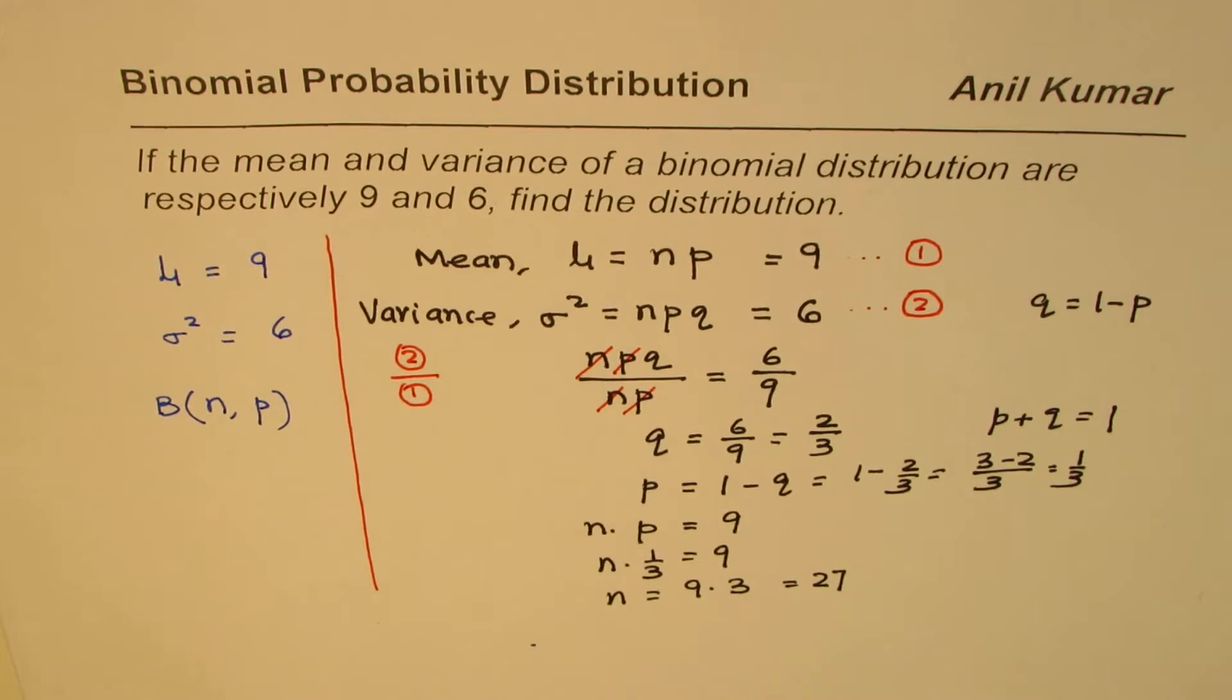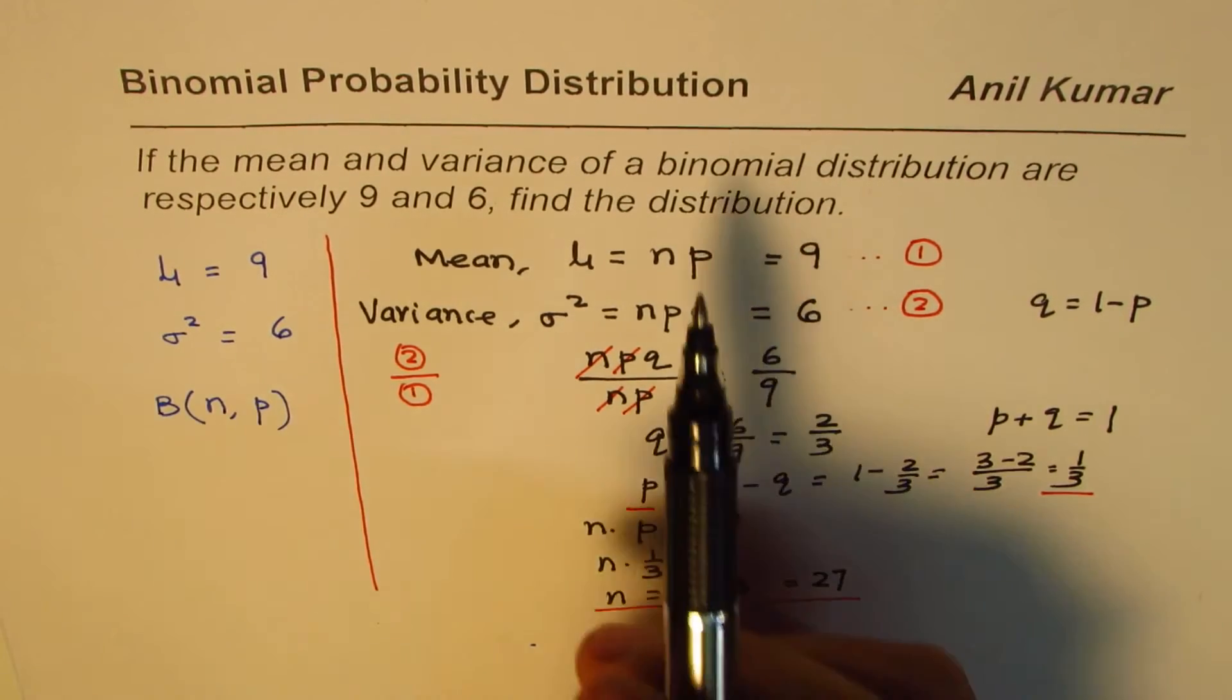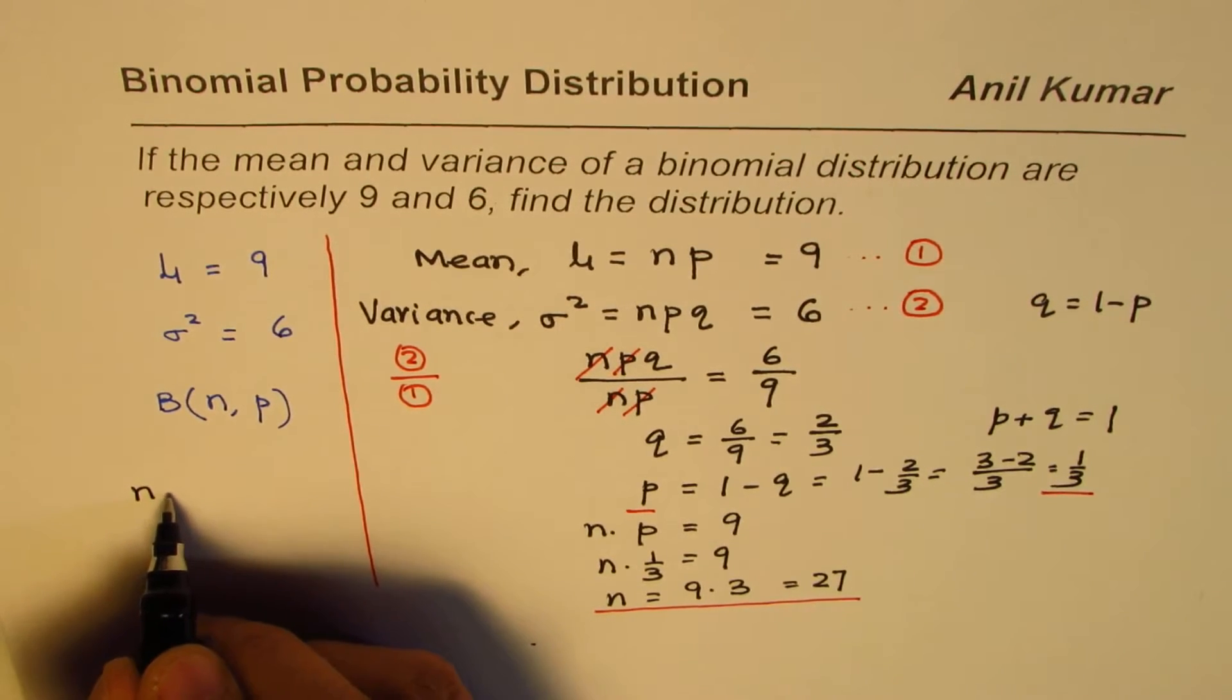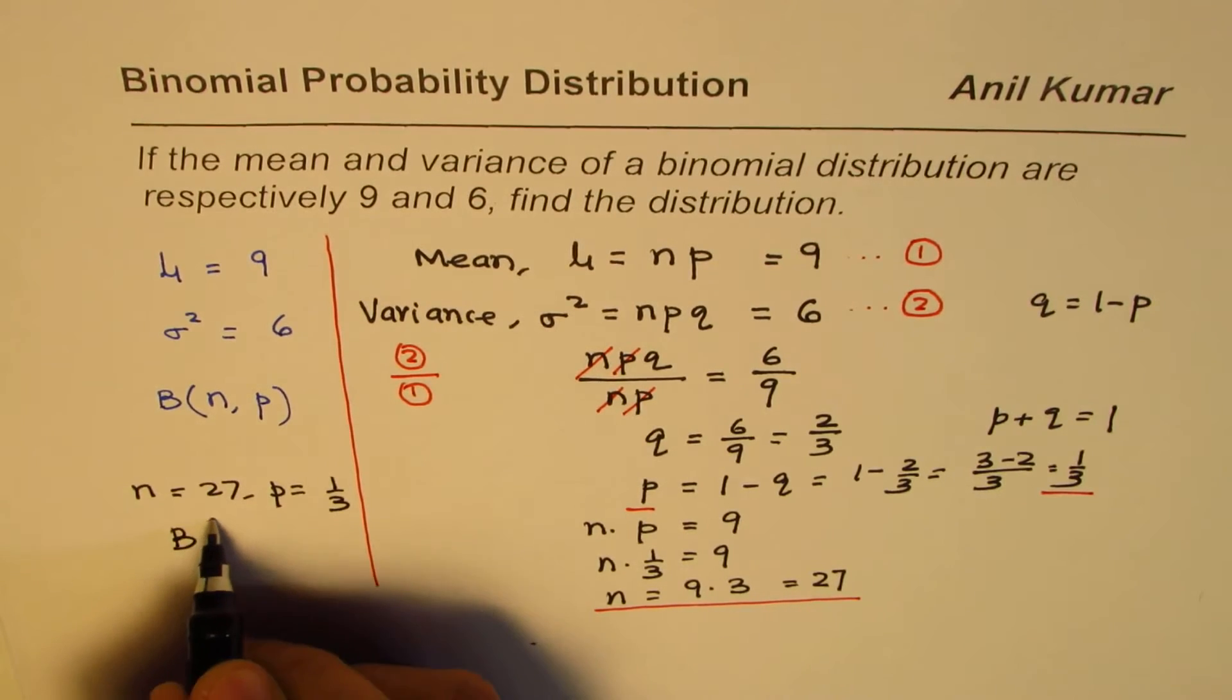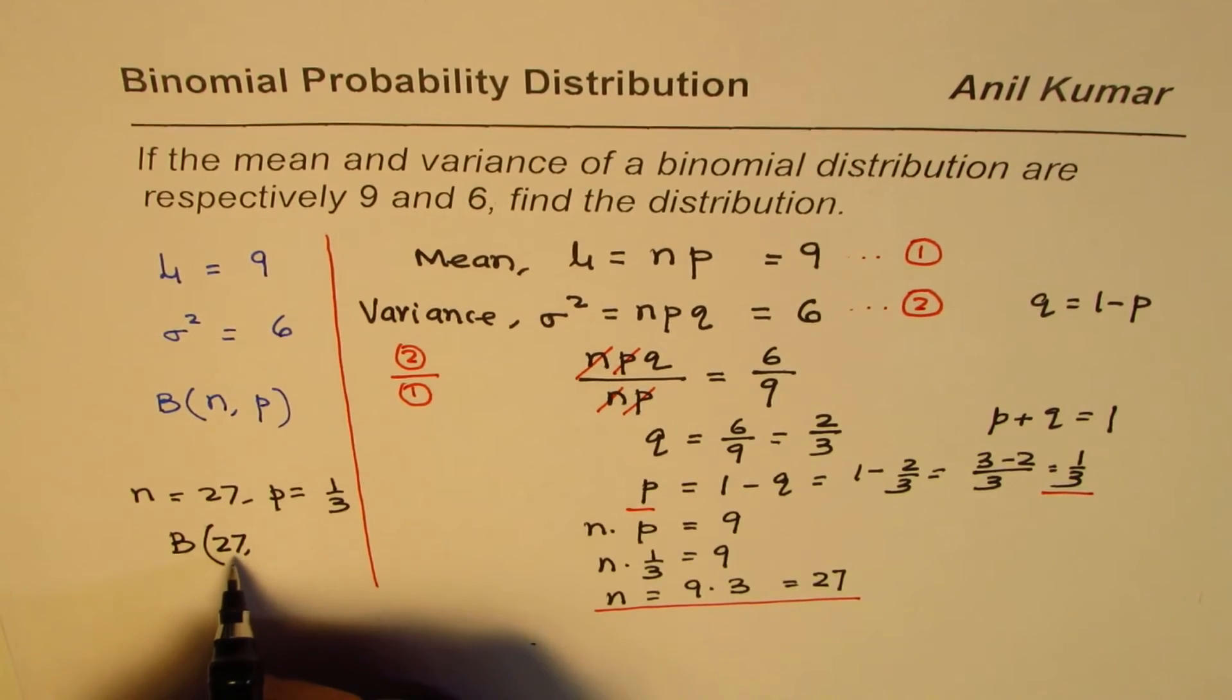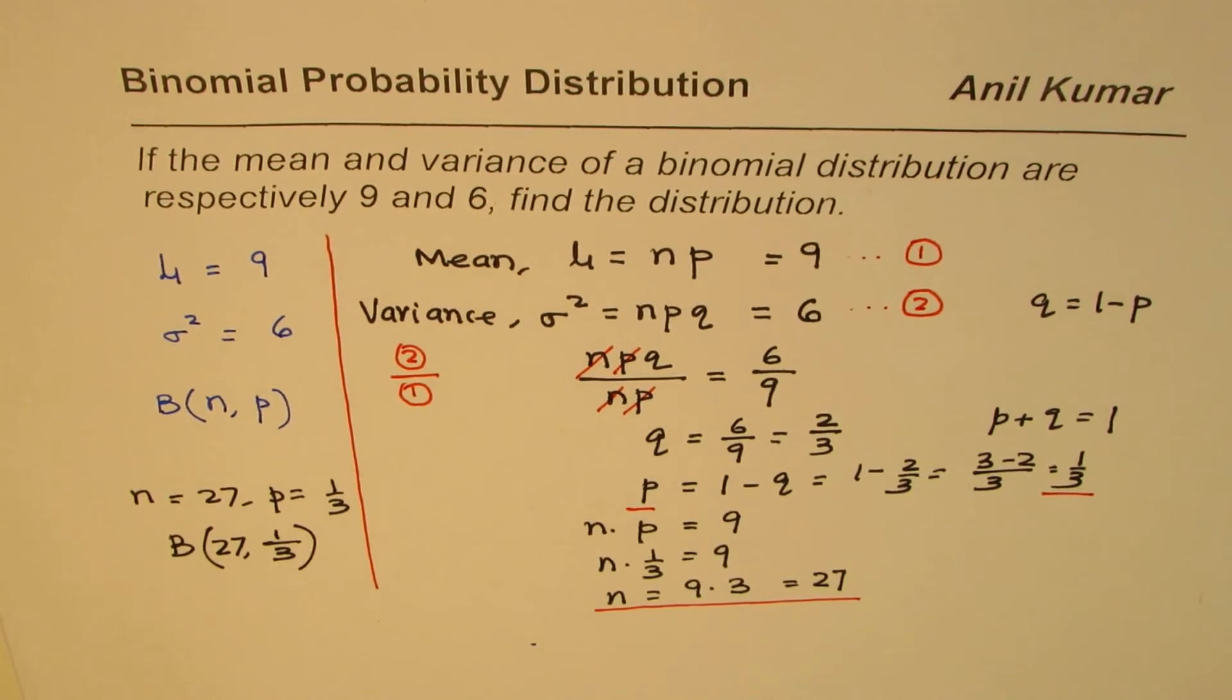So we get the value of n, which is 27. We find both values n and p. Therefore, what is the distribution? The distribution has n Bernoulli trials, so n equals 27 and p equals 1 over 3. We could write this as a binomial distribution with 27 trials and probability of success in each trial is 1 over 3. I hope the steps are clear.